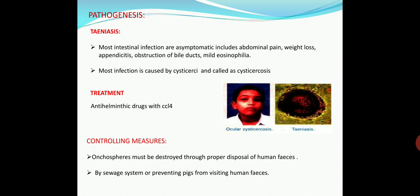The eggs passing through the stomach — either from ingestion or reverse peristalsis — hatch in the small intestine, penetrate the intestinal wall, and are distributed throughout the body via the circulatory system. Common sites of infection are skeletal muscles and the brain. Cysticerci in the muscles may cause weakness and pain, encystation in the eyes can cause blindness, and development in the brain leads to epilepsy.